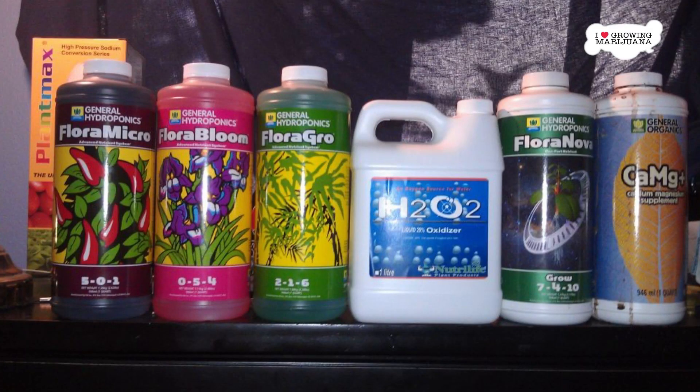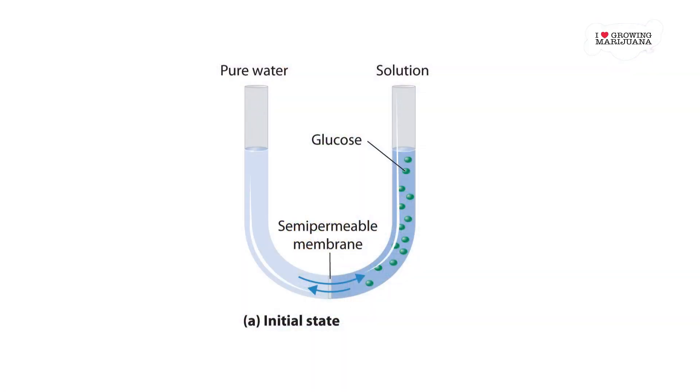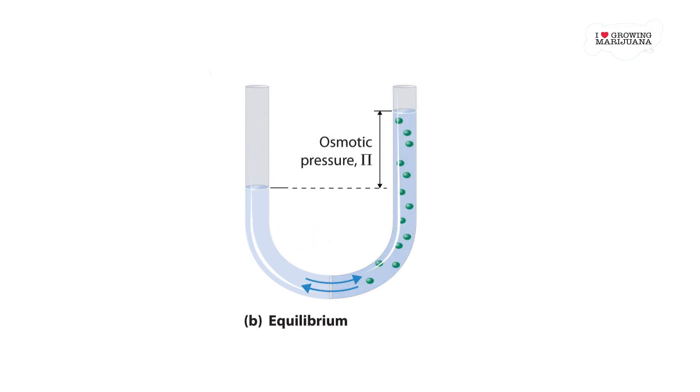A semi-permeable barrier partitions two containers with liquid inside of them. Water flows from the liquid with the higher concentration of solutes to the liquid with the lower concentration. This movement is not unpreventable, however. It can be reversed by putting pressure on the more concentrated liquid. It is possible to figure out how much pressure should be exerted in order to stop the water from passing through the membrane altogether.